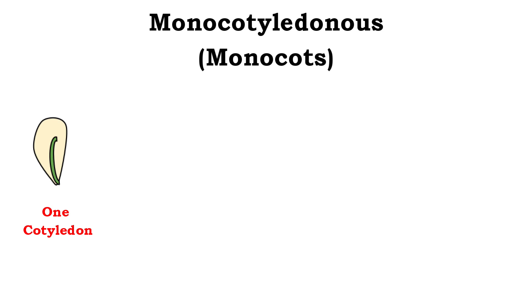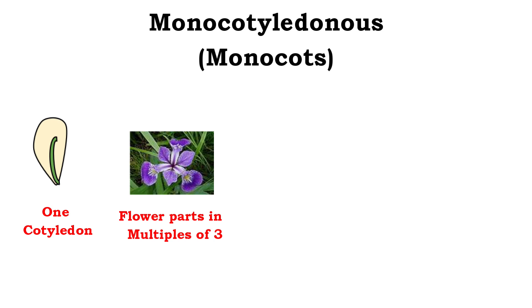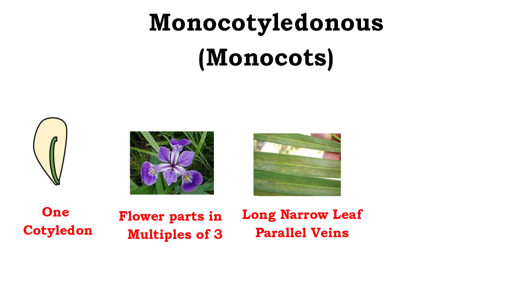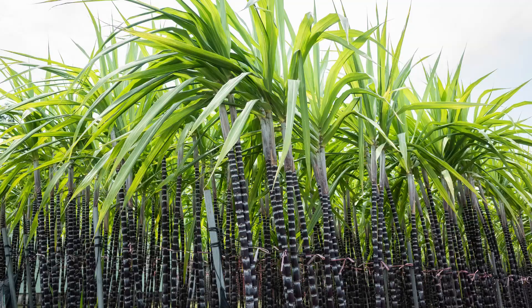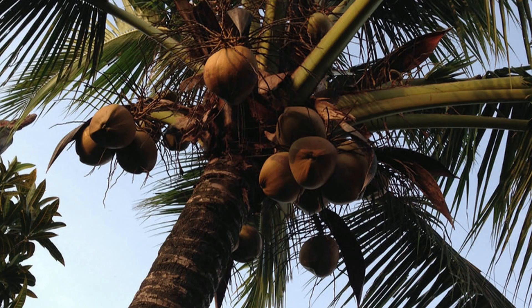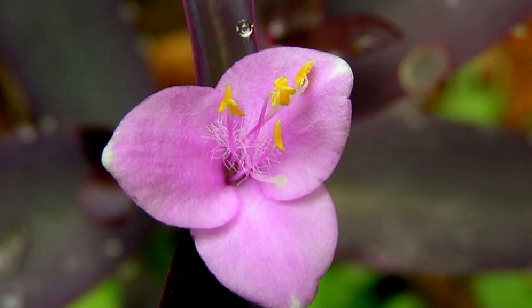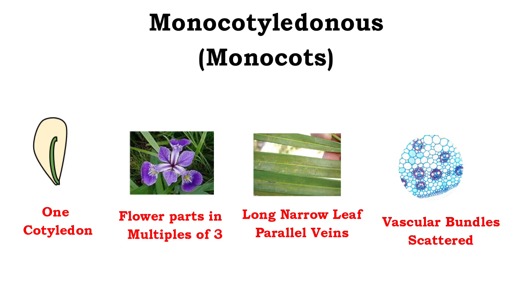Monocotyledonous plants have one cotyledon in their seed, hence the name. Flowers are trimerous, meaning that their floral parts or petals are in multiples of three. Monocots have a parallel arrangement of major leaf veins. Leaves are long and narrow, as you can see here — palm trees, sugarcane, banana or coconut trees, and even grass. Monocots have one pore in their pollen, and a scattered arrangement of vascular bundles in the stem. Monocots do not have secondary growth.